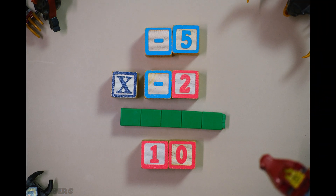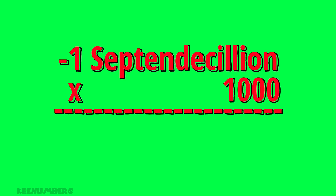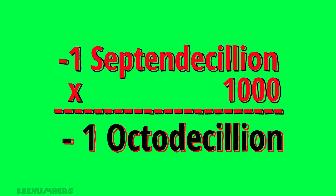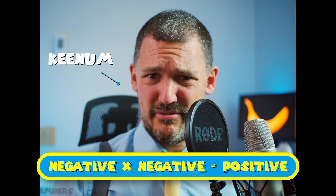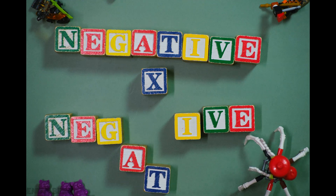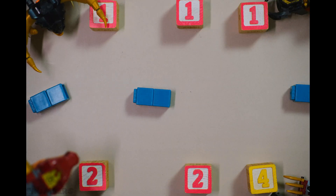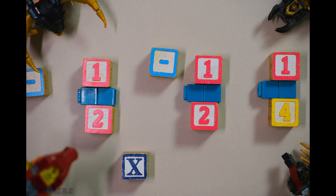Negative 5 times negative 2 is positive 10. Negative 1 septendecillion times 1,000 is negative 1 arcodecillion. Negative times negative is positive — easy so far, right? Proving that is above and beyond the scope of this class. Negative times negative is positive. For example, negative 1 half times negative 1 half is 1 quarter.